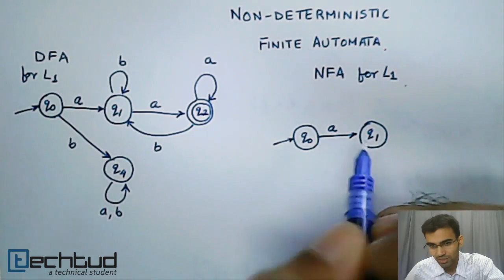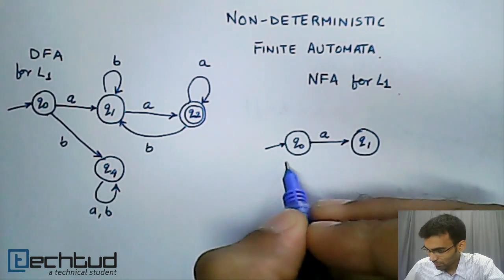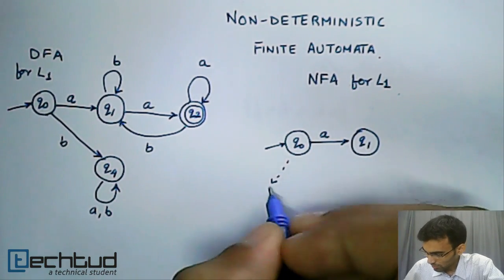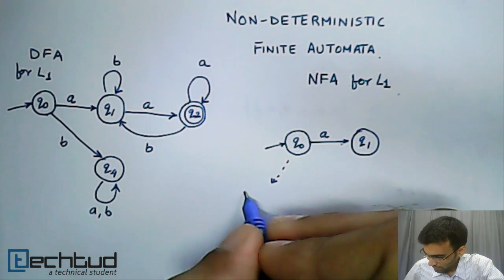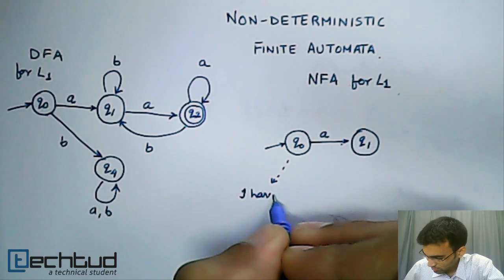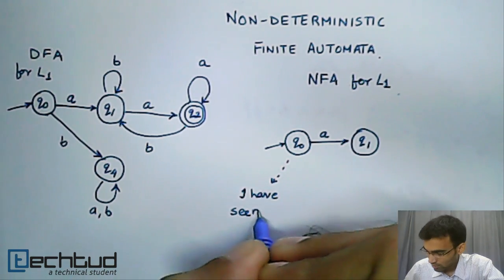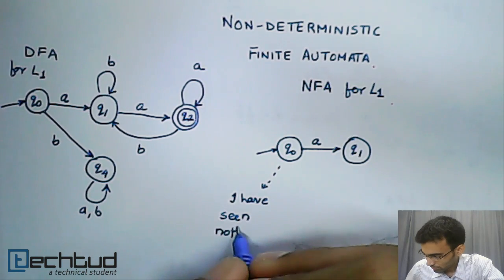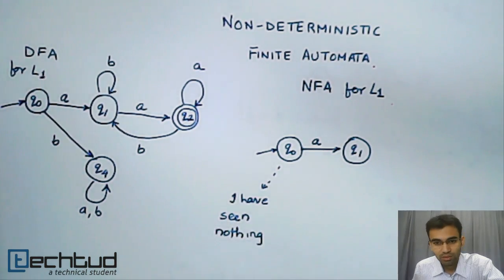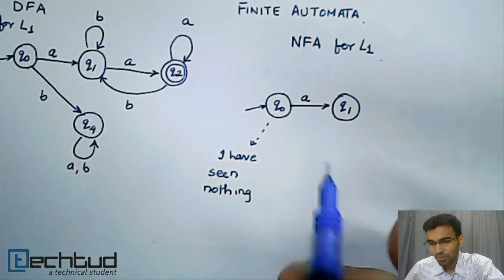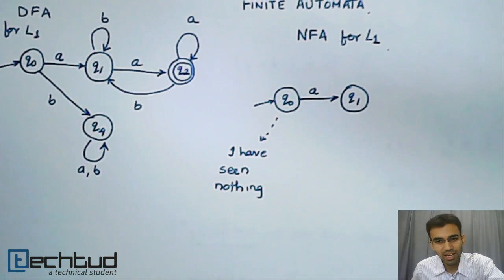The reason why we go to a different state is because Q0 here represents the fact that I have seen nothing. In this particular example, Q0 represents I have seen nothing.